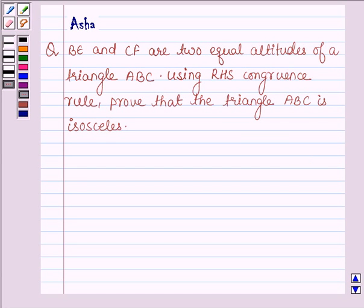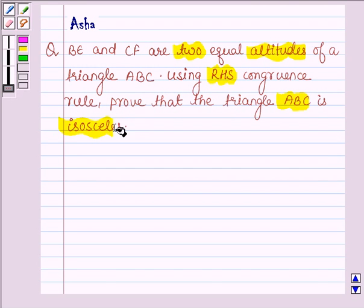Hello and welcome to the session. I am Asha and I am going to help you with the following problem which says BE and CF are two equal altitudes of triangle ABC. Using RHS congruence rule, prove that the triangle ABC is isosceles.